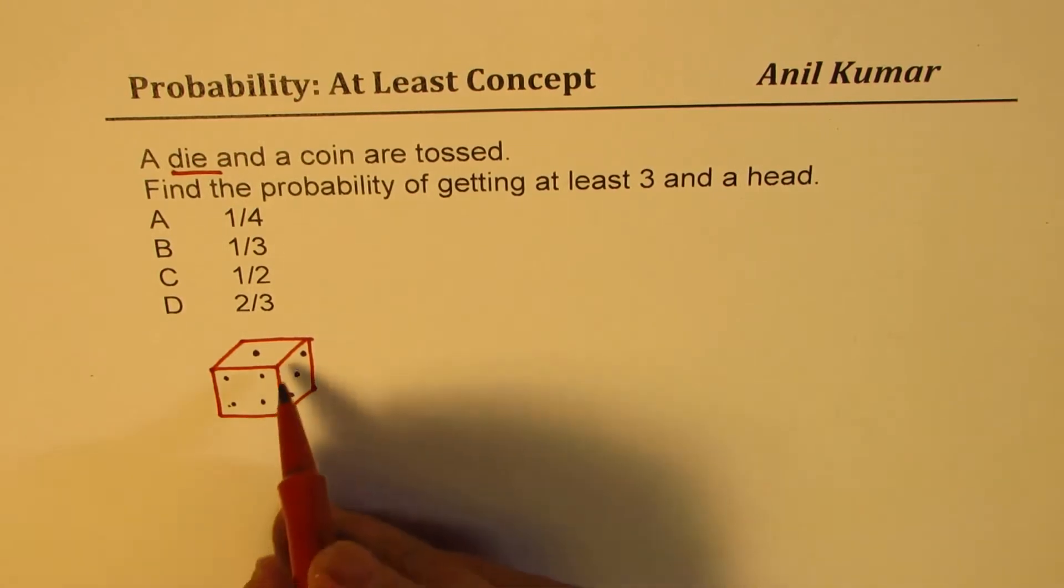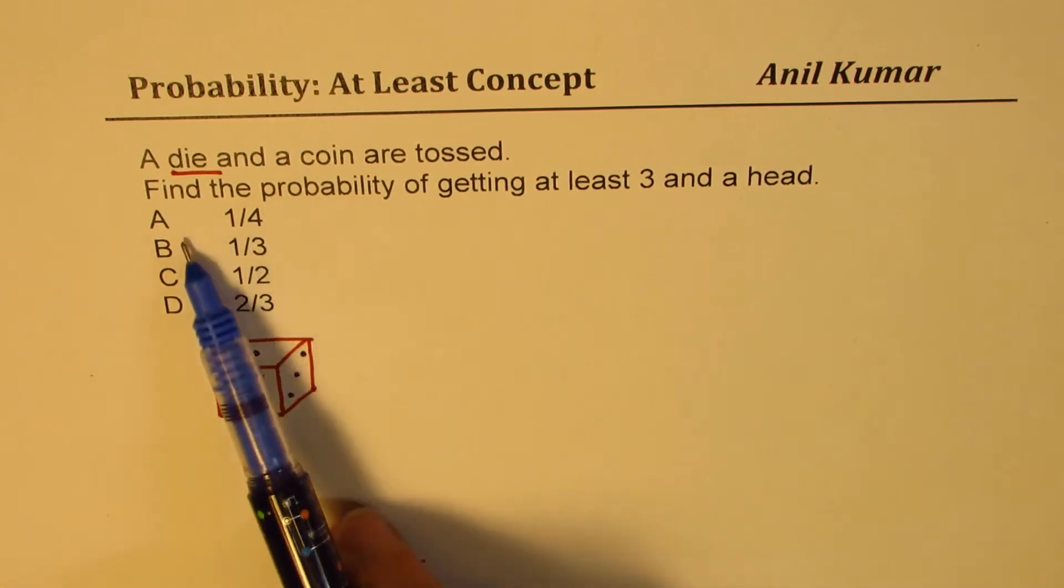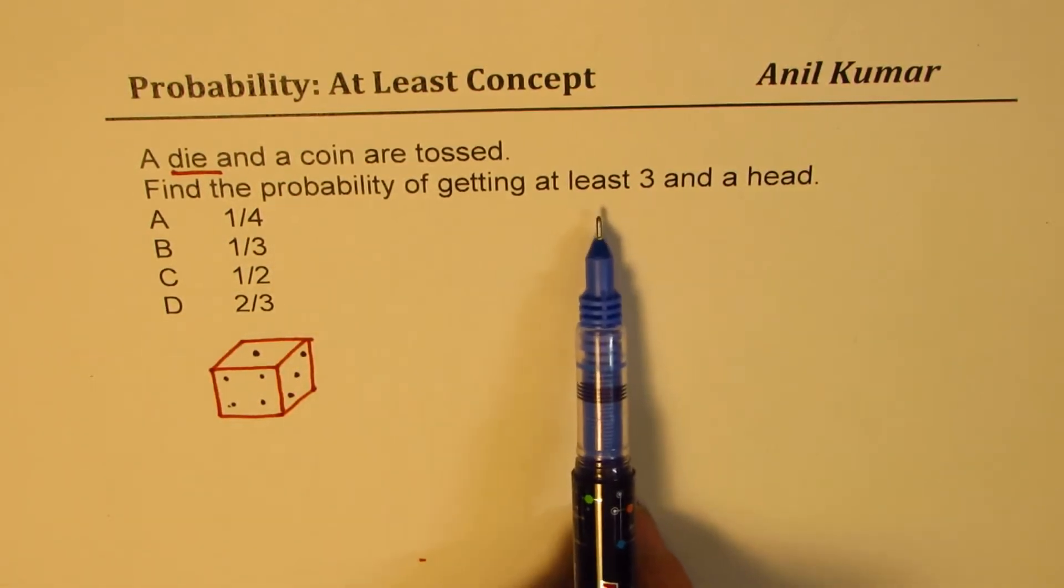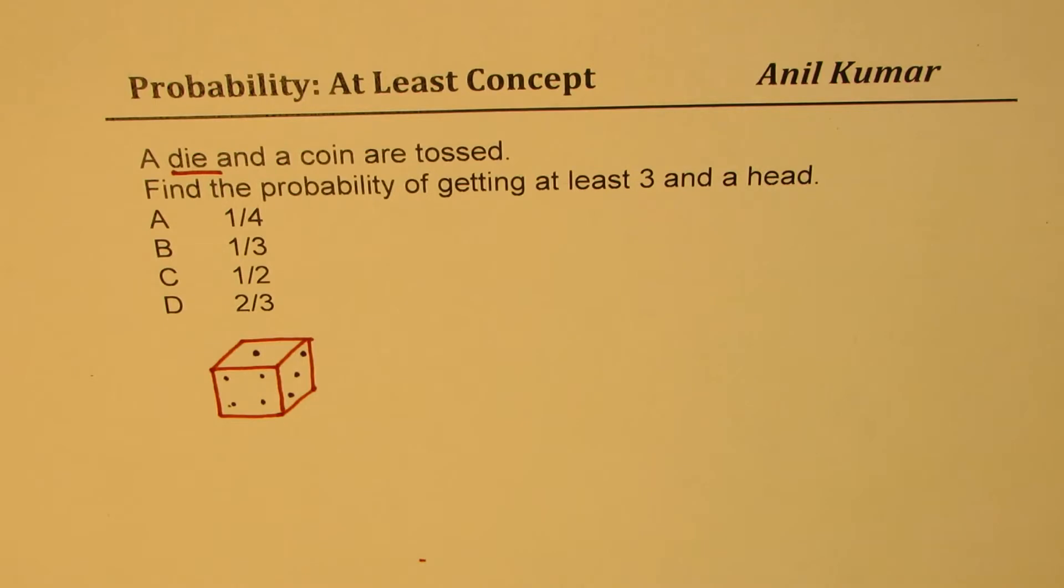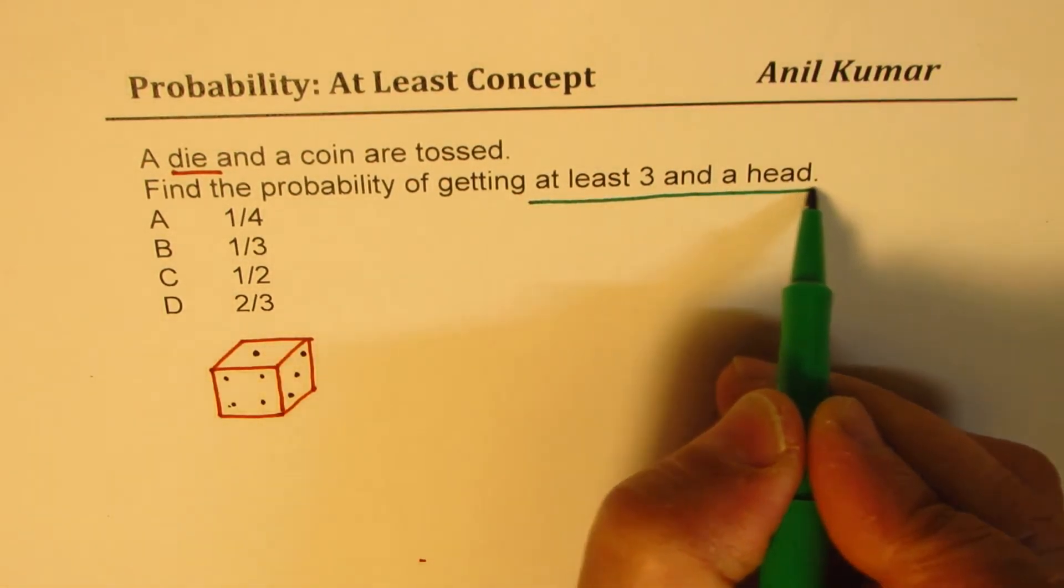When a dice is tossed we could get numbers from one to six, and for a coin we could get head or a tail. So you need to find the probability of getting at least three and a head. I'd like you to pause the video, answer the question, and then look into my suggestions.